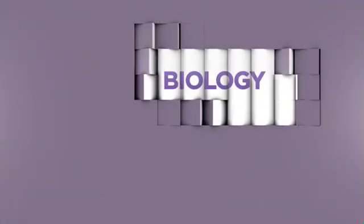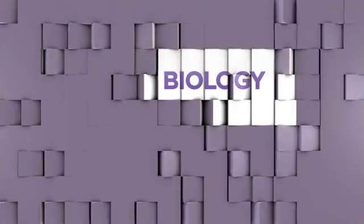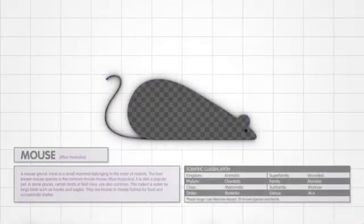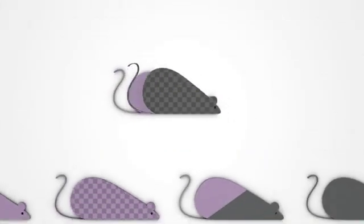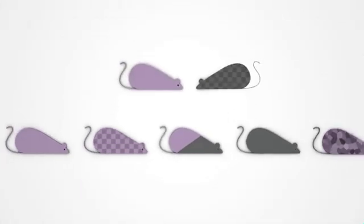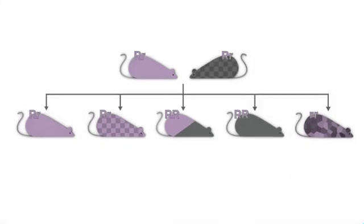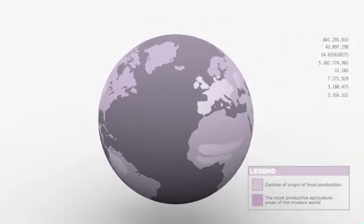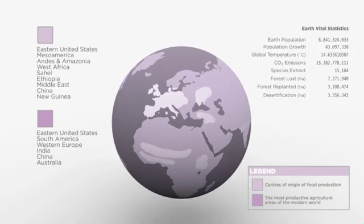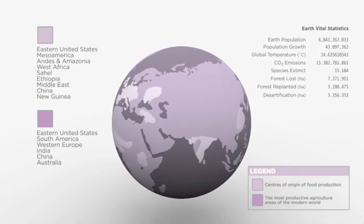Genetics is a discipline of biology and is the science of heredity and variation in living organisms. The fact that living things inherit traits from their parents has been used since prehistoric times to improve crop plants and animals through selective breeding.